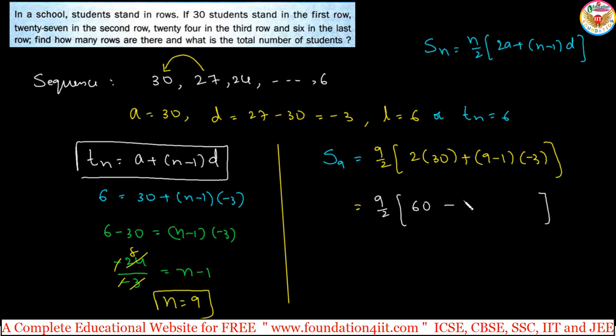8 times -3 is -24, so 9/2 times (60 minus 24). 60 minus 24 is 36, cancel to get 18. 18 times 9 equals 162. So 162 students total and 9 rows total. The pattern: frame the series or sequence first, then see what data is given and which formula to apply.